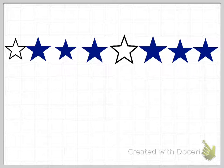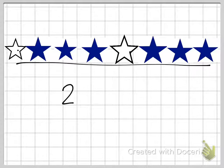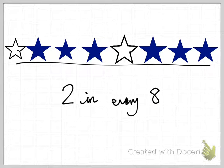Now, here's another example with some stars. I have 1, 2 white stars and 6 blue stars. But in total, there are 8 stars. So I could say 2 in every 8 stars are white.